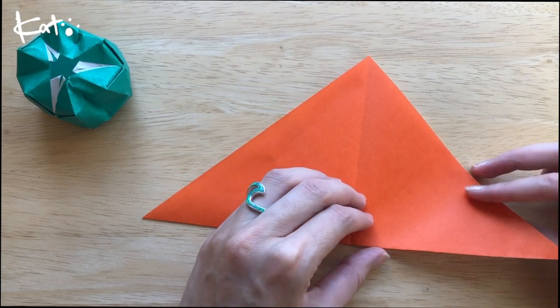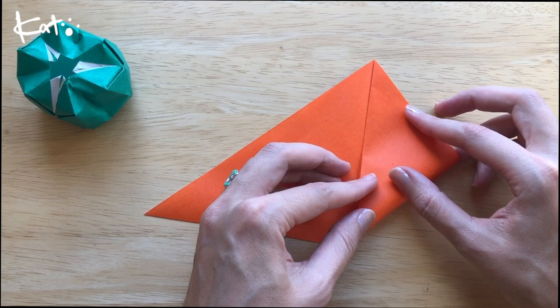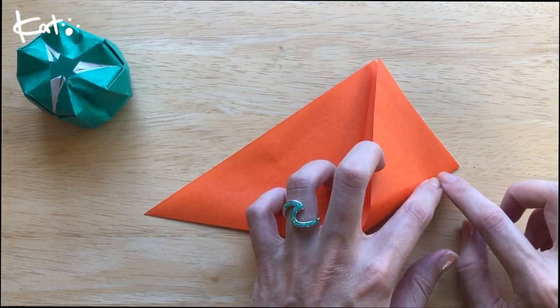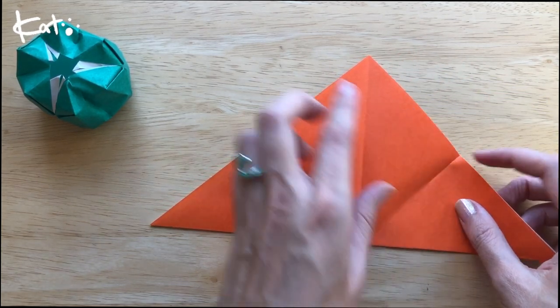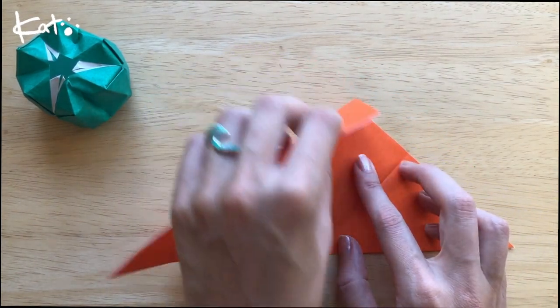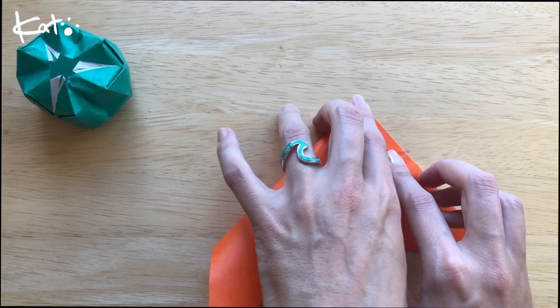Now we're just gonna make a marking. Take this corner up to the top, the right corner up to the top corner, and just mark it right there. You don't need to fold it all the way. Once you've got that marking, now bring the top corner to the place we made the marking and make another marking right there.